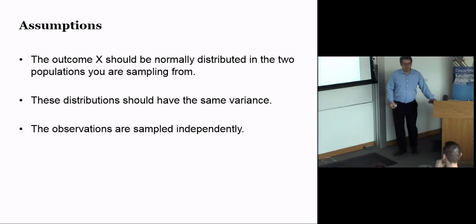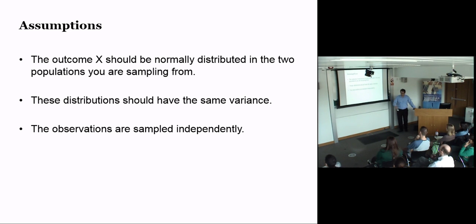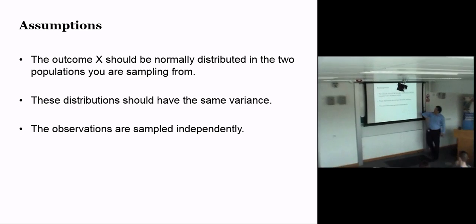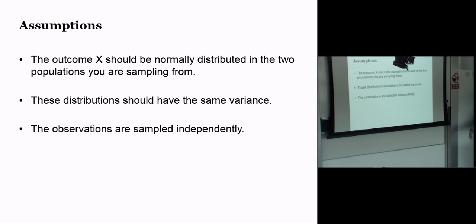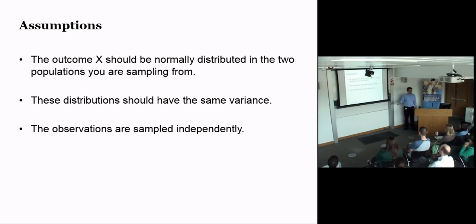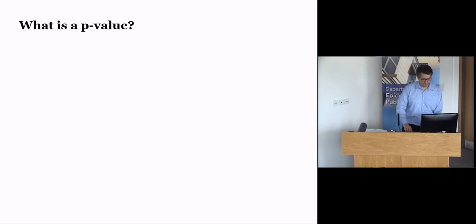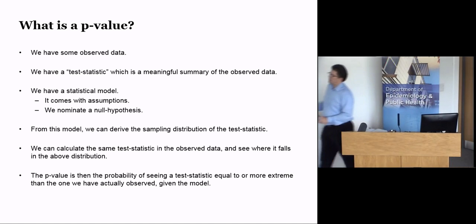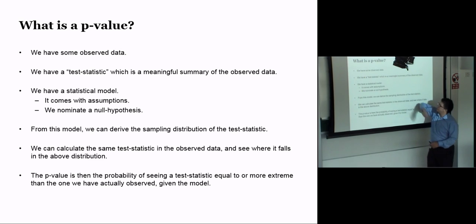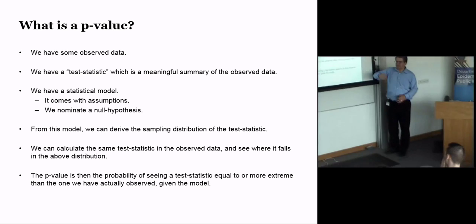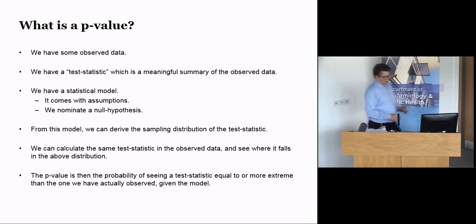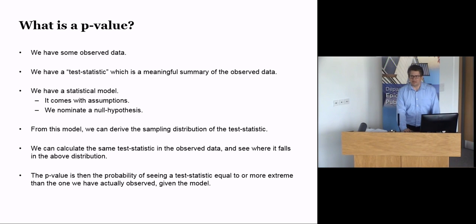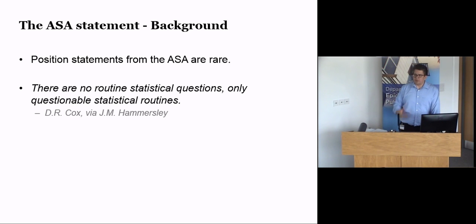Importantly, there are assumptions. For the two-sample t-test with equal variances and equal sample sizes, outcomes should be normally distributed in the two populations we're sampling from, and we're sampling independent, identically distributed observations. So to go through it again: observed data, test statistic, the model and its assumptions, the sampling distribution — and the p-value gives us the probability of seeing the test statistic at that value or more extreme, given the model and the assumptions.